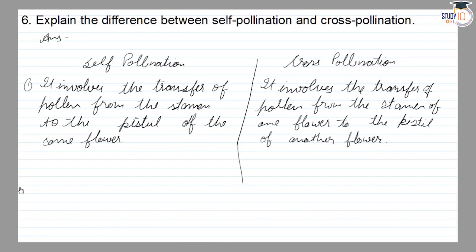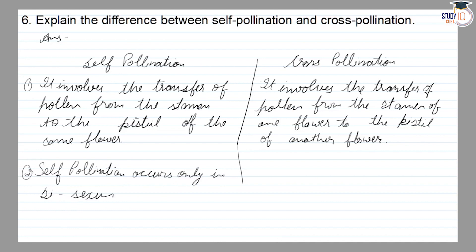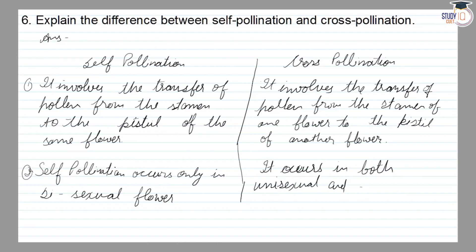The next point: self-pollination occurs only in bisexual flowers, whereas cross-pollination occurs in both bisexual and unisexual flowers.